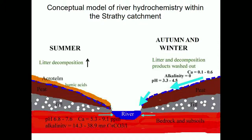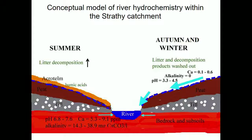In terms of a hydrological conceptual model, in summer the river is largely dependent on groundwater flows from bedrock and subsoils, which have relatively high pH of 6.8 to 7.6 and moderate calcium concentrations, but at very low flow. During summer, the water table goes down and increased decomposition of organic matter in peaty soils means that when a rainfall event occurs, a massive load of acidic fulvic and humic acids is washed in — with virtually no alkalinity — and flows become dominated by those overland flows of peaty waters.